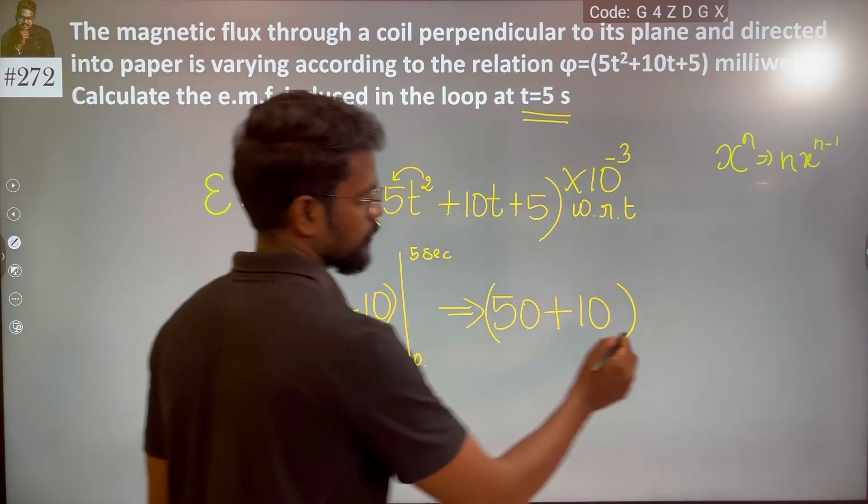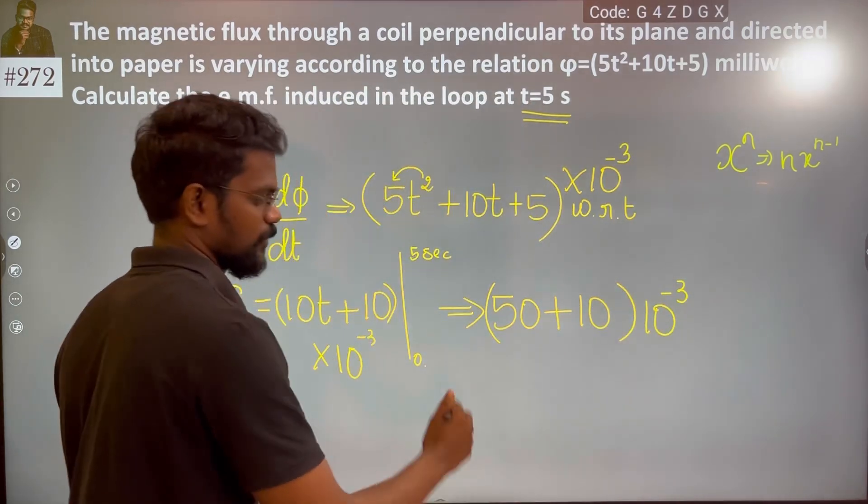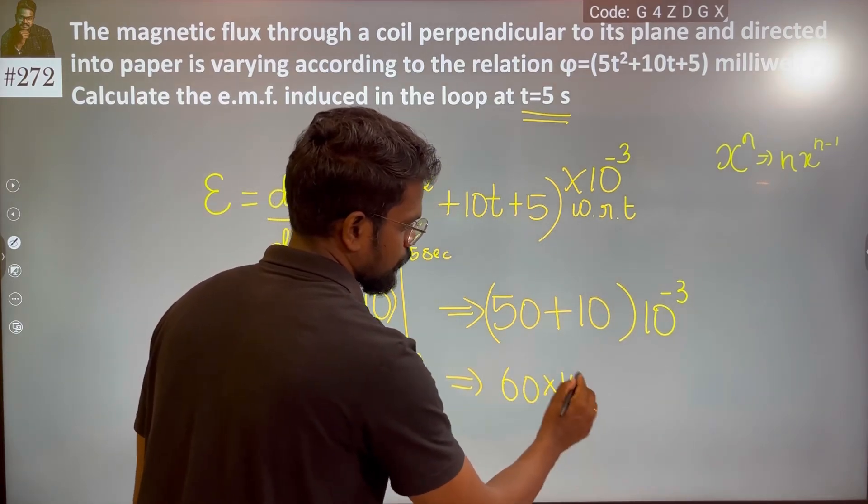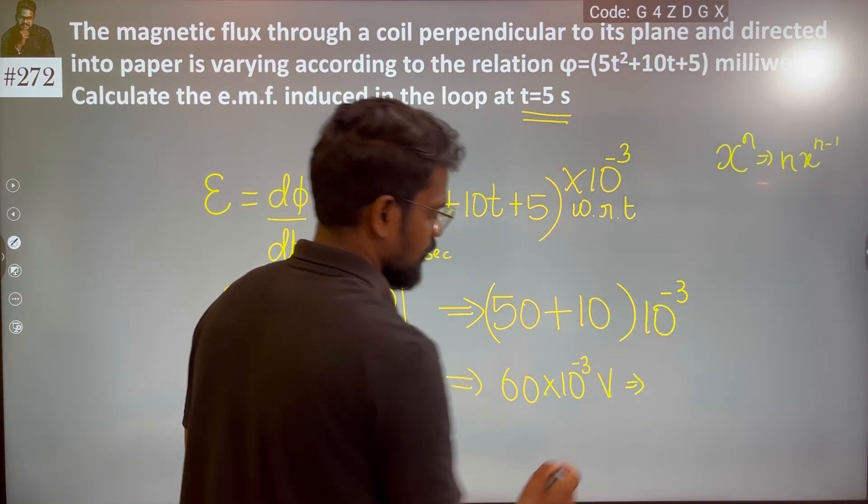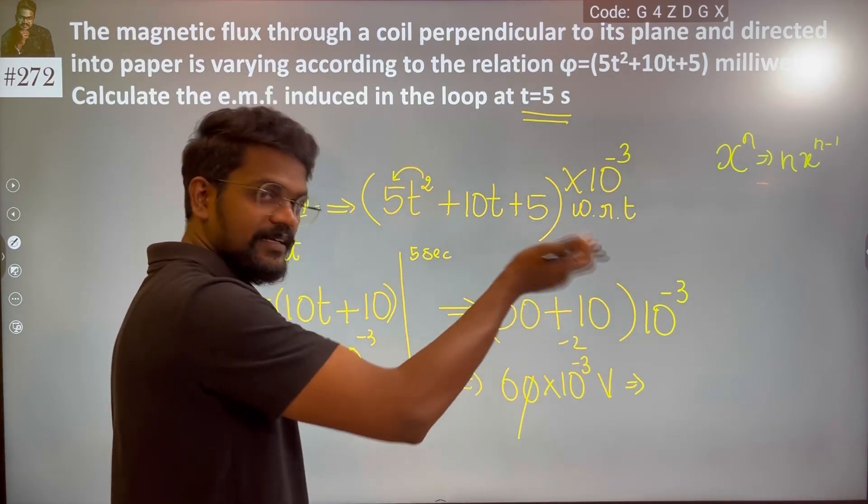Product of 10 to the power minus 3, milli will carry over, so which is 60 into 10 to the power minus 3 volt.